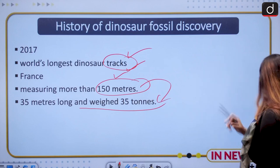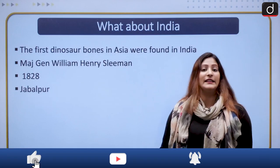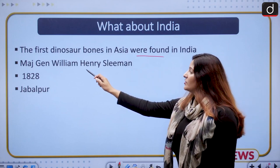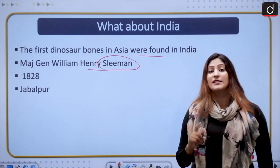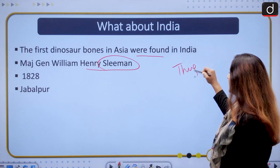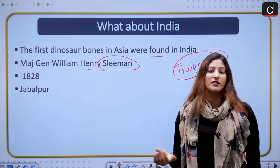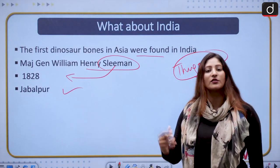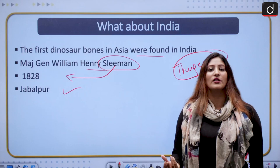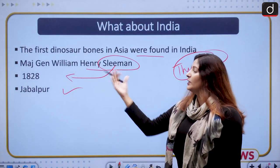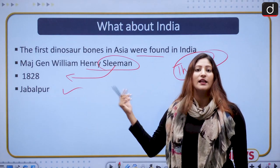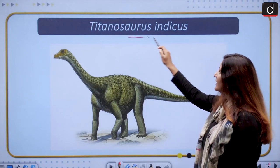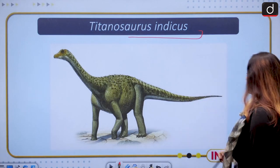In India, the first dinosaur bone found in Asia was discovered by Major General William Henry Sleeman—the same person related to the suppression of thuggee in the time of Governor General William Bentinck. He did so in 1828 in Jabalpur, Madhya Pradesh. In 1842, Richard Owen gave the terminology dinosaur, but in 1828, Henry Sleeman had already discovered the dinosaur bone. This is the Titanosaurus indicus fossil discovered in Jabalpur.